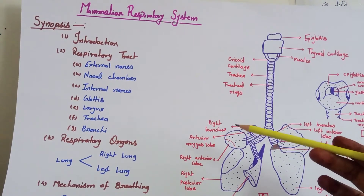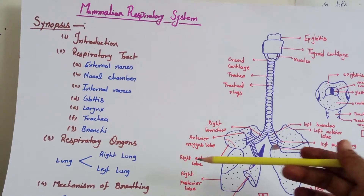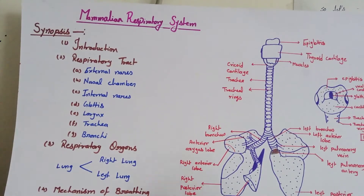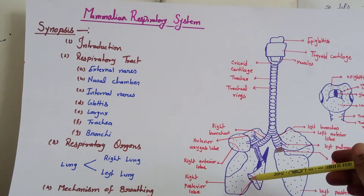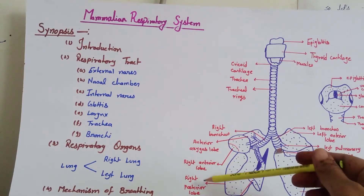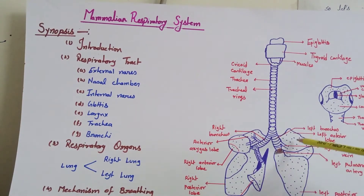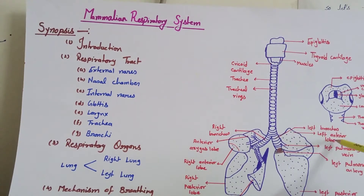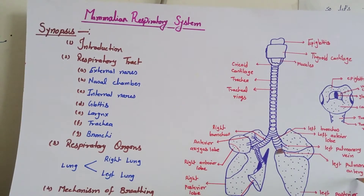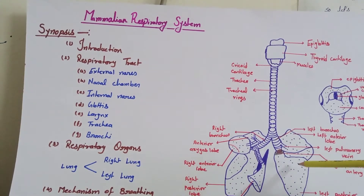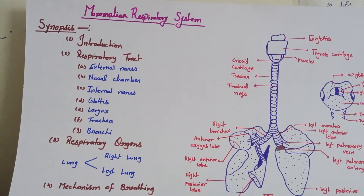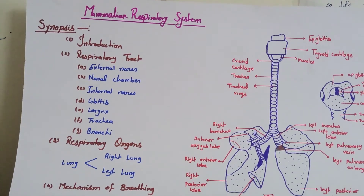The respiratory tract opens into the respiratory organ, the lungs. The lungs are divided into two parts: right lung and left lung. The right lung is divided into four parts: anterior azygos lobe, posterior azygos lobe, right anterior lobe, and right posterior lobe. The left lung is divided into only two parts: left anterior lobe and left posterior lobe. Notable structures are the left pulmonary vein and left pulmonary artery, which circulate deoxygenated and oxygenated blood to the lungs, completing the circulatory system in the rabbit.